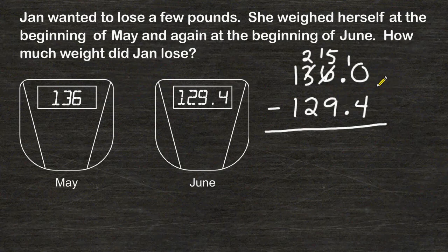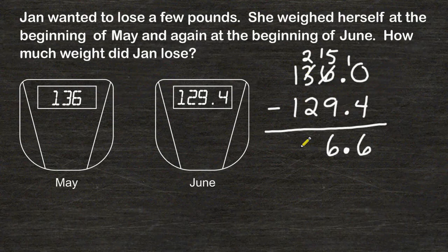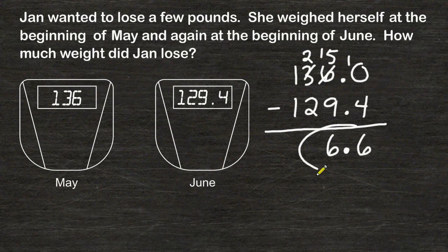Now we can start our subtraction. I'm going to start by dropping the decimal straight down. 10 take away 4 is 6, 15 take away 9 is also 6, 2 take away 2 is 0, and 1 take away 1 is also 0 — but I don't have to put any zeros out in front. So we would say that from May to June, Jan lost a total of 6.6 pounds.